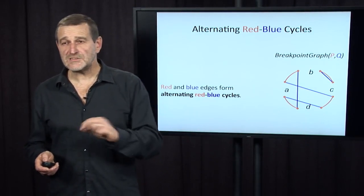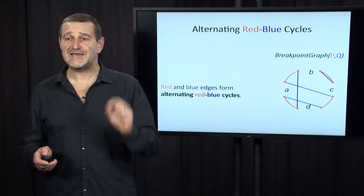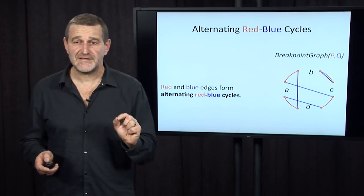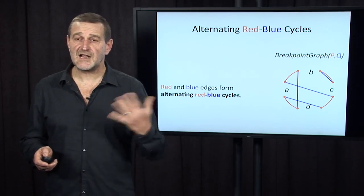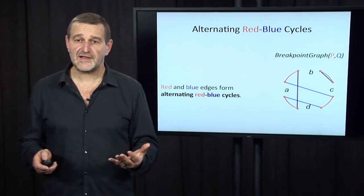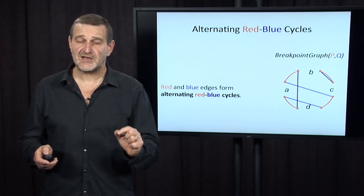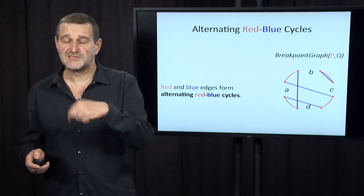Why? Because you may notice that at every node there is a single red edge and a single blue edge meeting. And therefore, the resulting graph must consist of alternating red-blue cycles. After every red edge there is a blue edge, and after every blue edge there is a red edge.